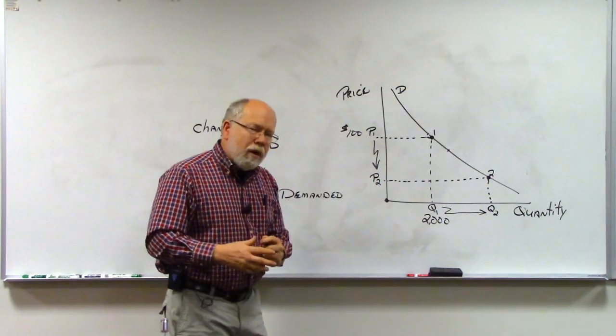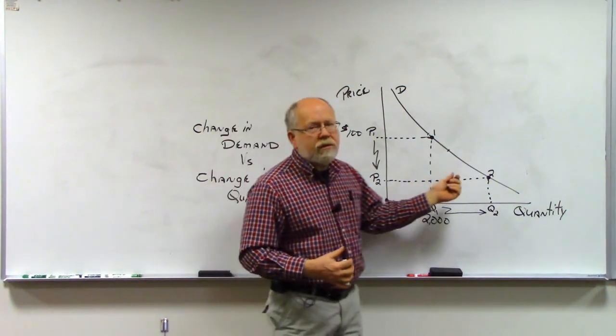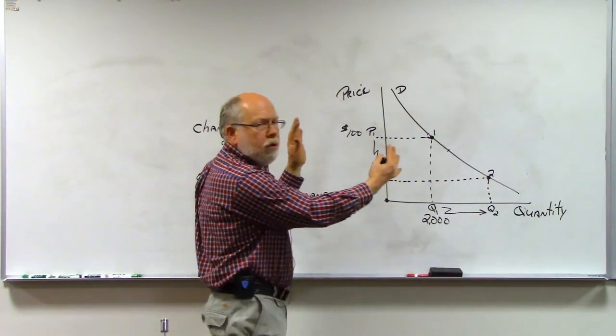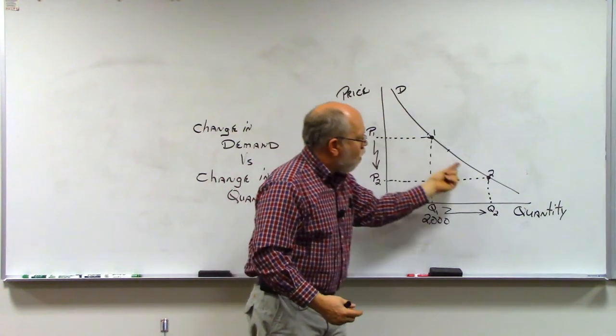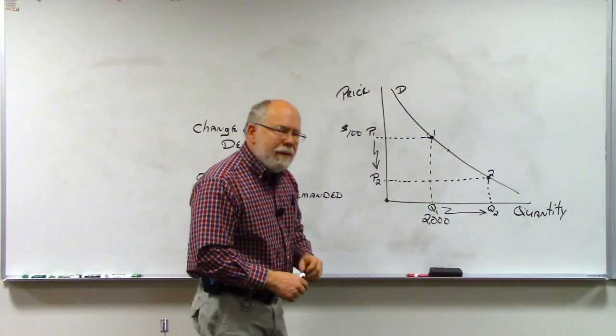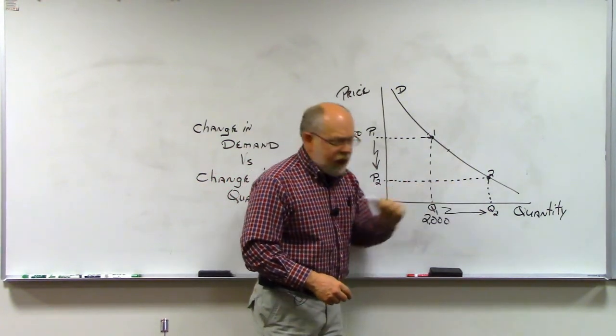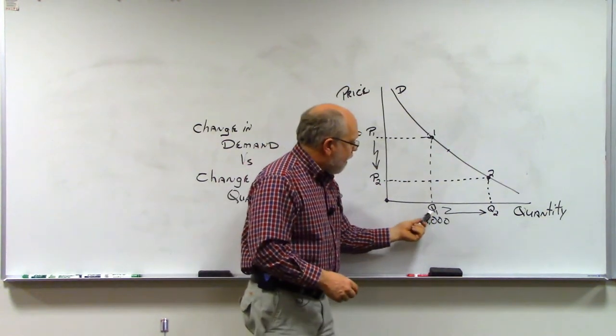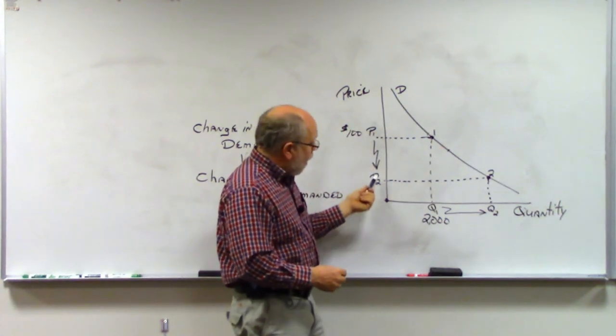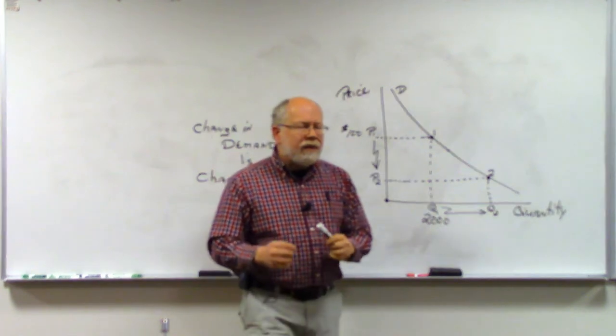If we come in at this price at $100, we're going to get a quantity demanded of 2,000. Why are we going to call that a quantity demanded? Because it's bouncing off of the demand curve. Later on, if we come in here and hit a supply curve and come straight down, it's going to be quantity supplied because we're bouncing off of the supply curve. In this case, we're looking at demand, and for every price, there is a quantity demanded associated with it. If we lower the price, we are increasing the quantity demanded.